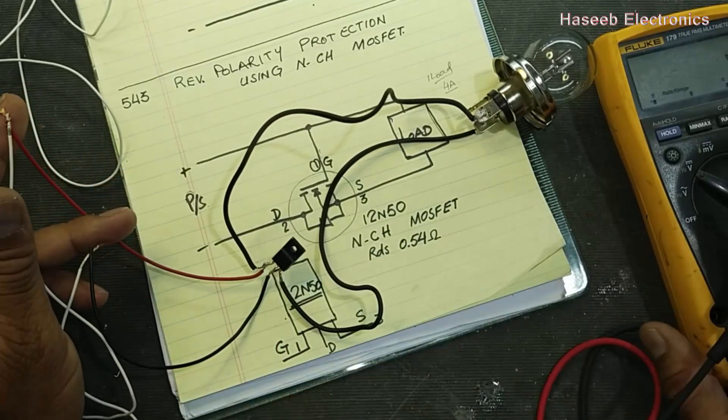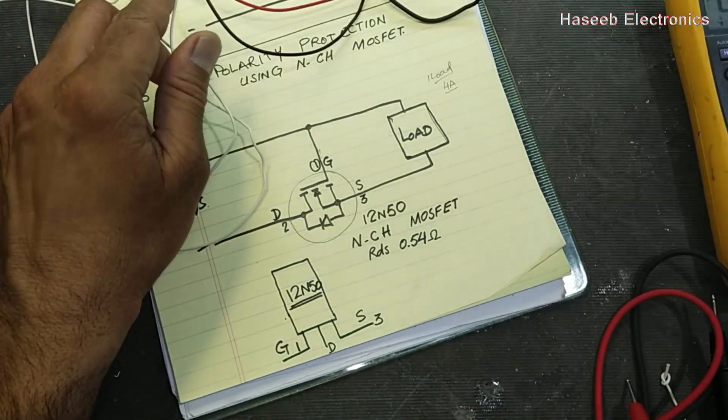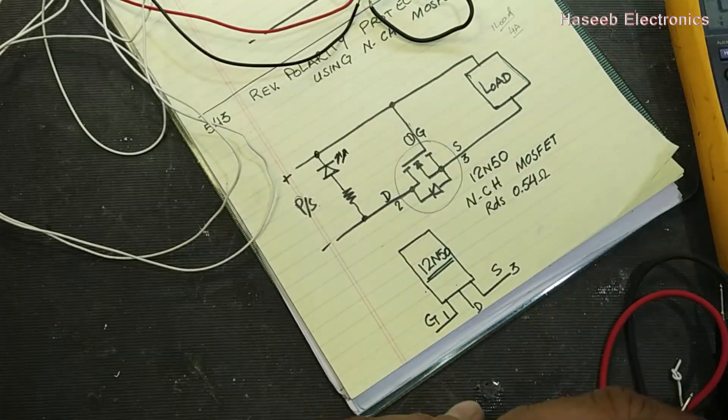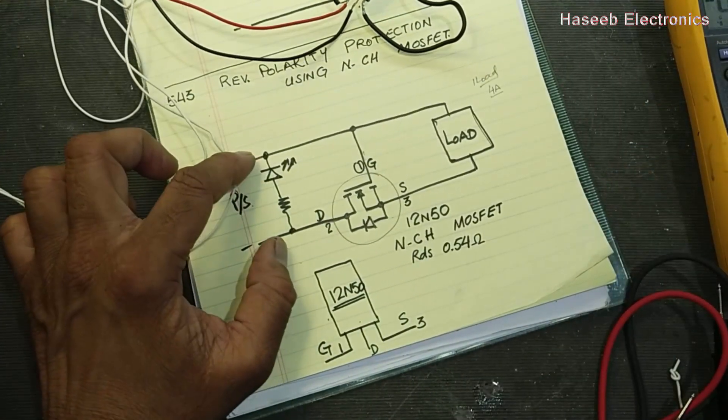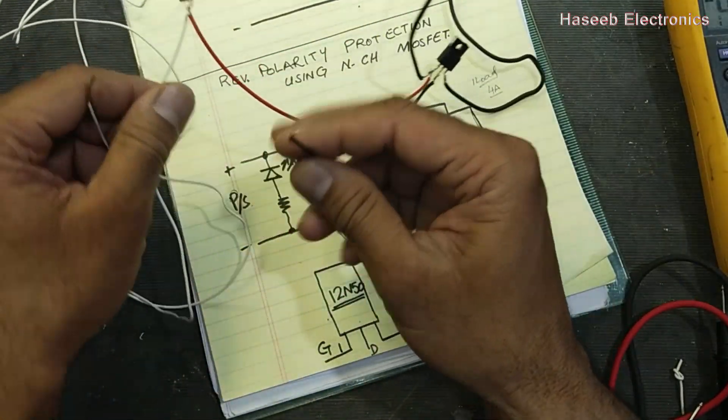We can also add a reverse polarity indicator at this line, so whenever the polarity is reversed this indicator will turn on.